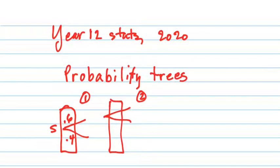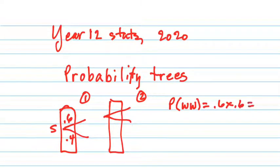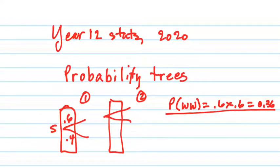Then you do the probability of whatever it is. Probability of win equals 0.6 times 0.6, which is 0.36. Make sure that you're listing all these probabilities at the end, which is probably the most tedious part of it. But if you don't have them all listed, it makes it a lot more difficult to go back and read the probabilities from your tree.